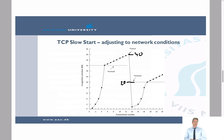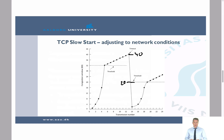Let's look at how TCP slow start works with a concrete example. The x-axis shows the transmission number, and the y-axis shows the congestion window size. In the first transmission we send one segment, in the second we send four, in the third we send eight. We start with a congestion window of one and double it each time.